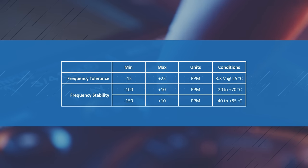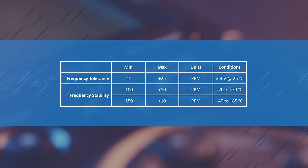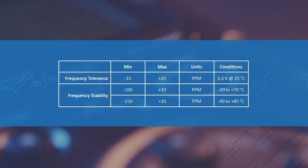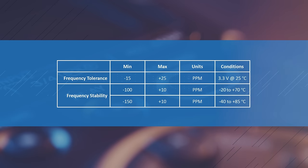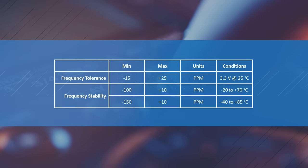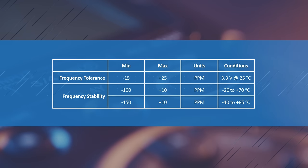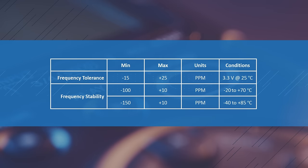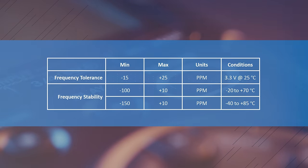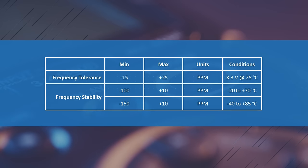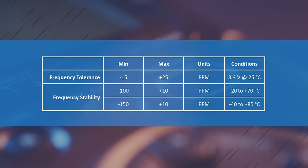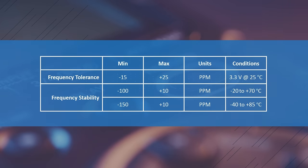This 32.768 kHz frequency oscillator provides excellent frequency stability. When operating at 3.3 volts, the frequency tolerance is minus 15 to plus 25 parts per million at 25 degrees Celsius. Over the extended temperature range of minus 40 to plus 85 degrees Celsius, the frequency stability is minus 150 to plus 10 ppm.